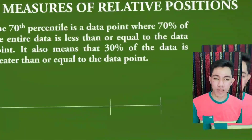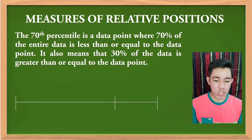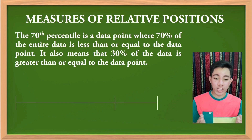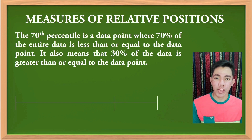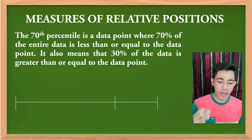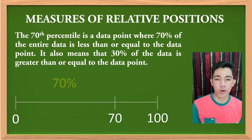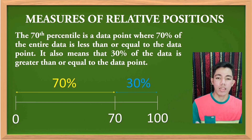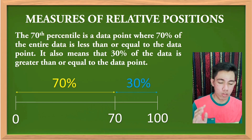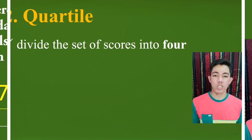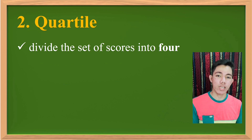Another example: the 70th percentile is a data point where 70 percent of the entire data is less than or equal to that data point. It also means that 30 percent of the data is greater than or equal to that data point. Looking at the graph, the 70 percent is below or less than the 70th percentile value, and the remaining 30 percent is above. That is all about the percentile.